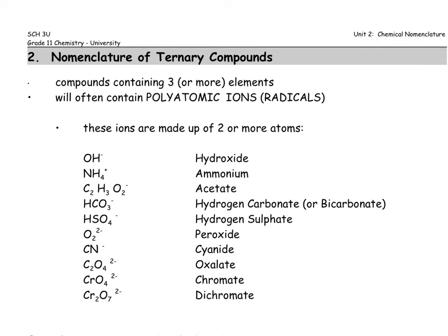We need to know how to name those as well. You should remember from last year what a polyatomic ion is, sometimes called a polyatomic radical. The prefix poly means many, and atomic meaning atom.